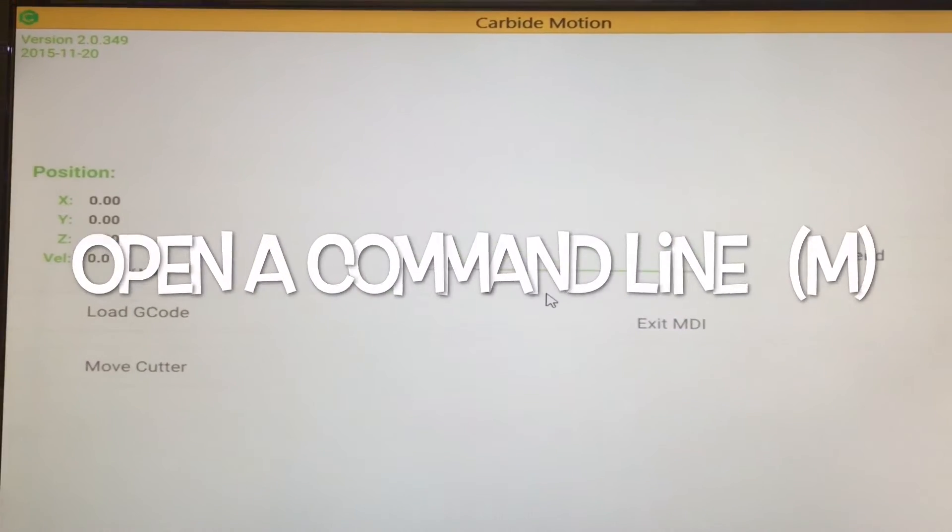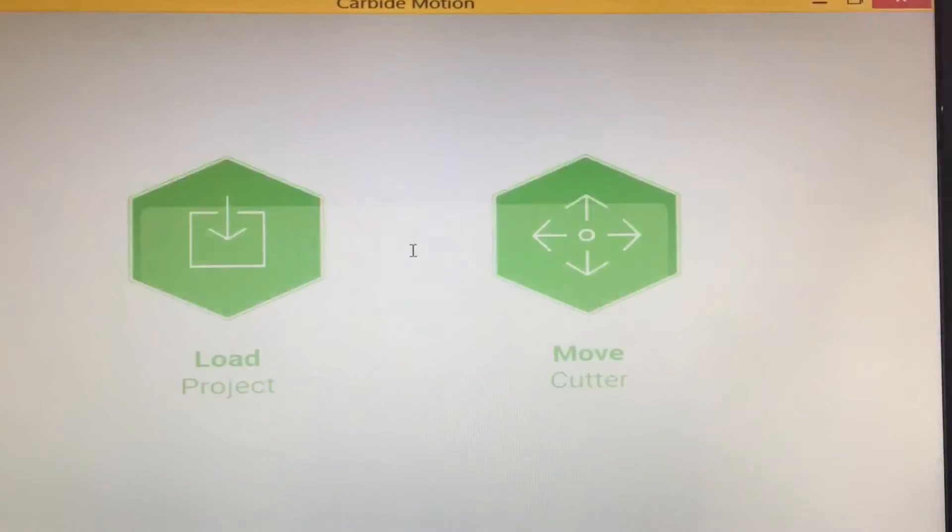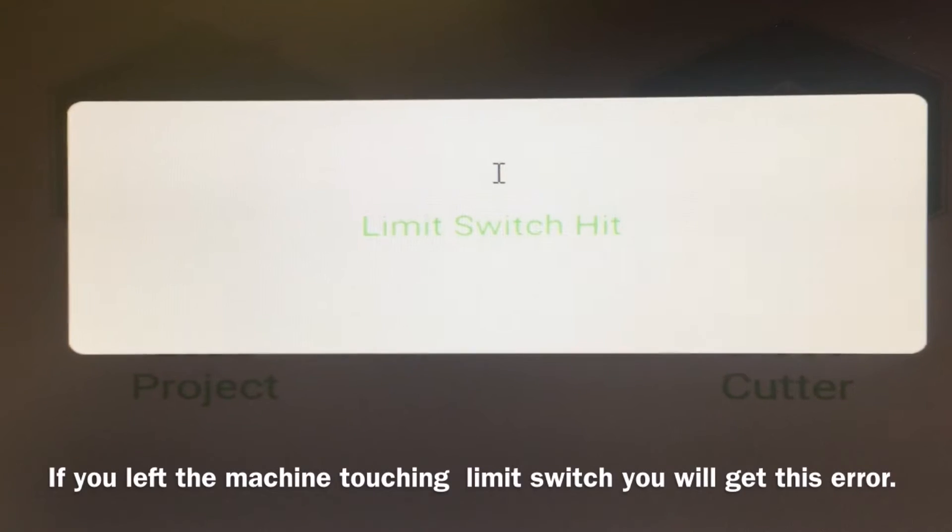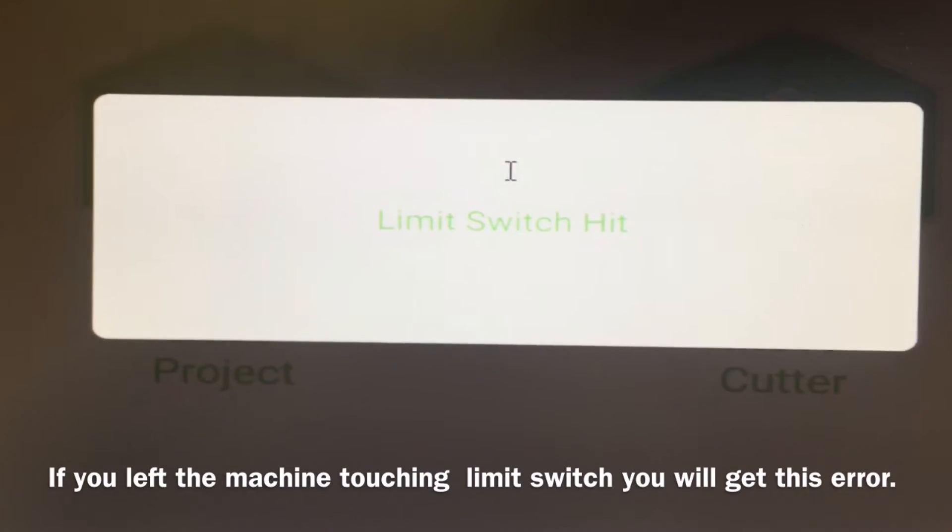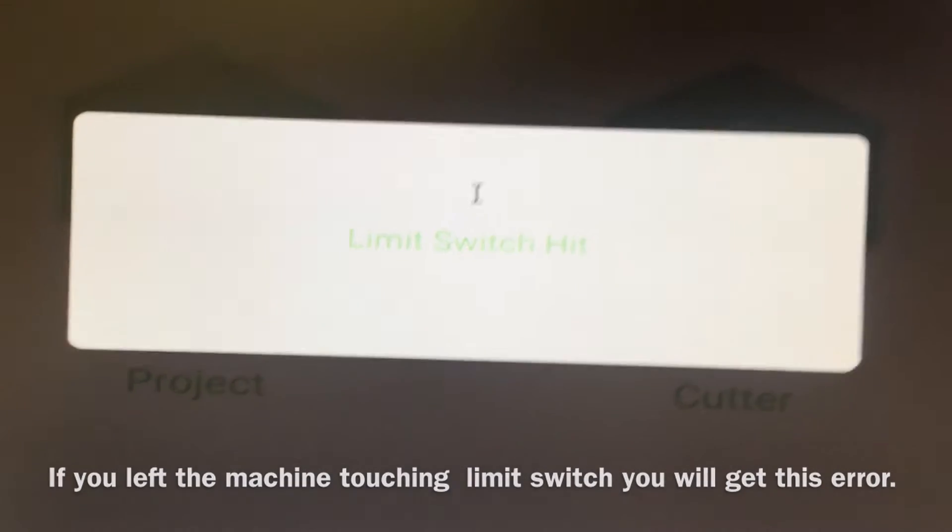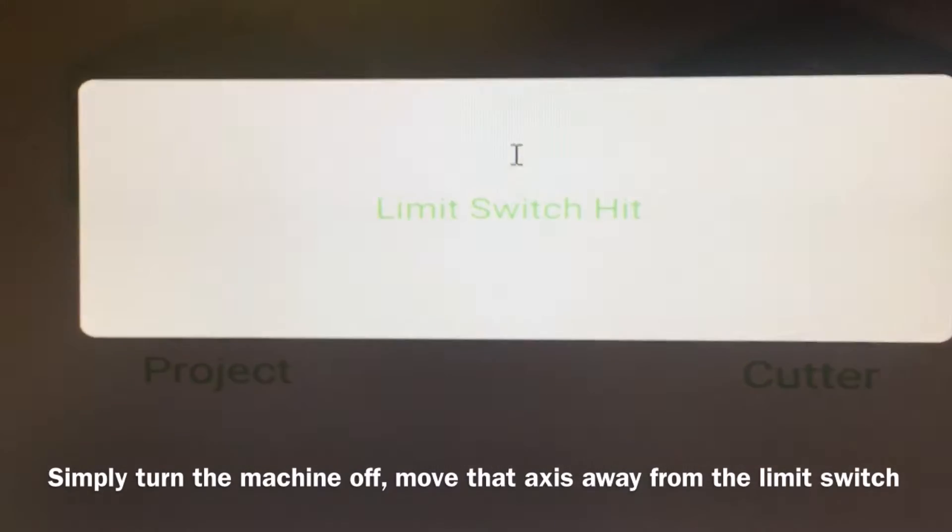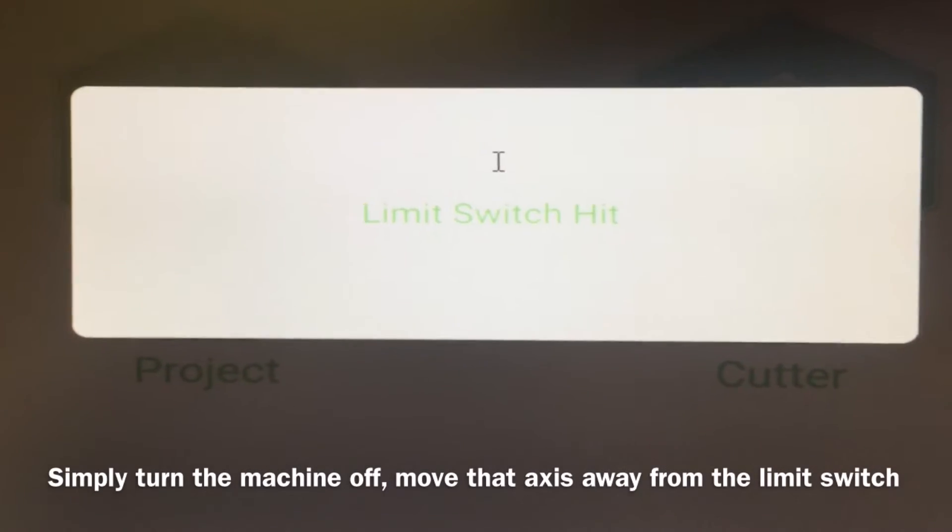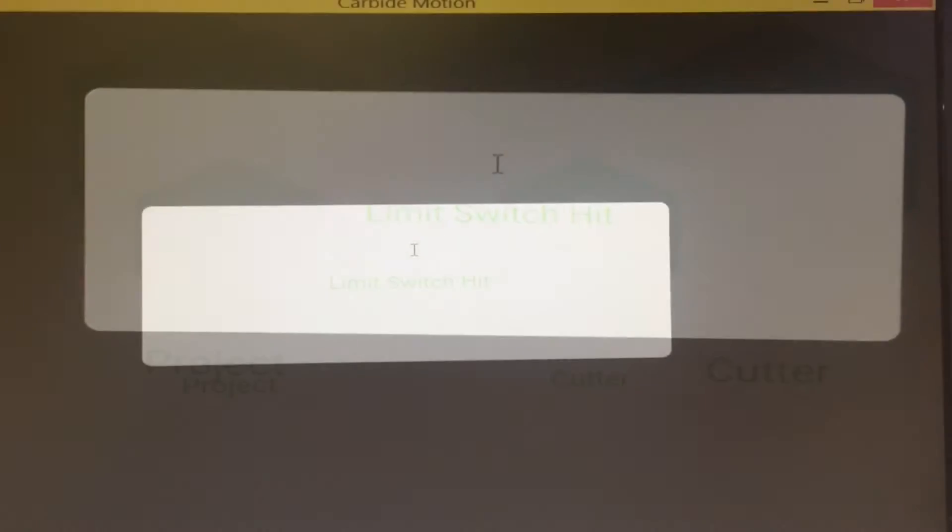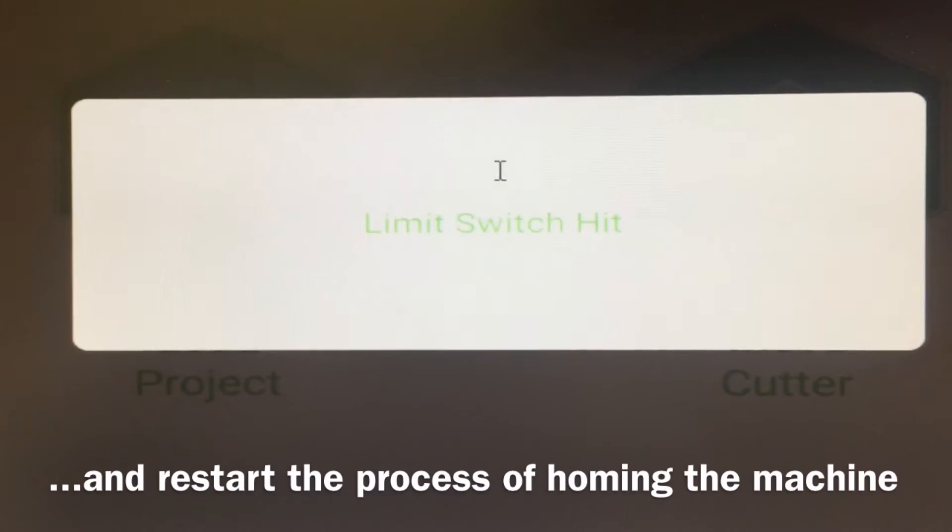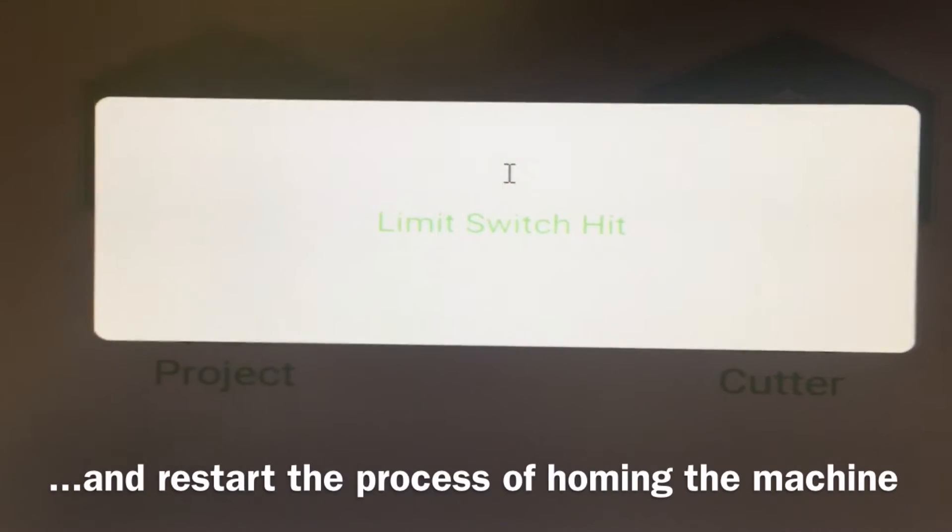Get the command line by quitting and typing M. The very first thing you need to do is home the machine. It always needs to know where zero, zero, zero is. So if you've accidentally had the machine touching a limit switch when you last cleaned it, very simple fix: just turn it off, move the machine away, and then rehome it.